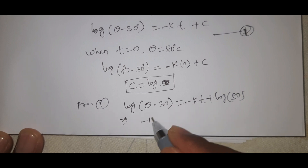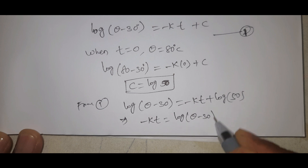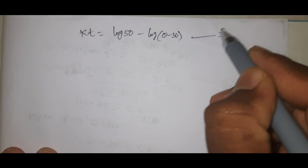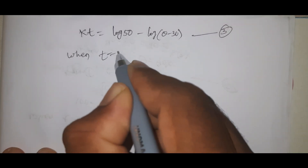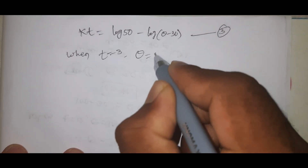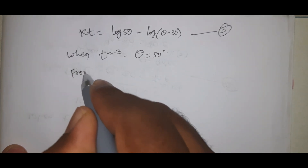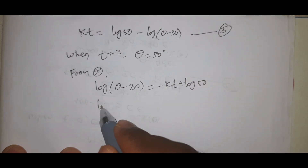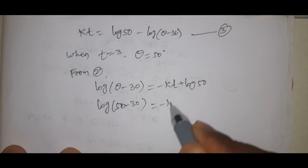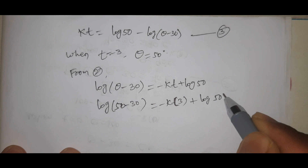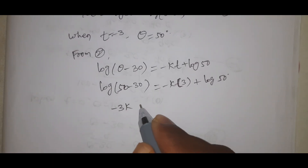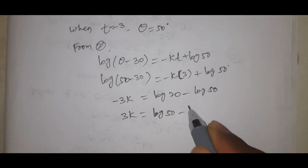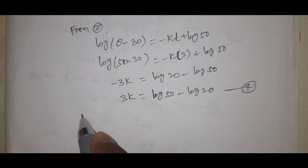Rearranging: minus kt equal to log theta minus 30 minus log 50. Now applying the second boundary condition: at t equal to 3 minutes, theta equals 50 degrees centigrade. So minus 3k equals log 20 minus log 50, which is equation number 4.